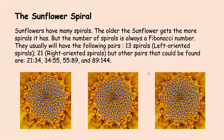Now let's see some sunflower spirals. Sunflowers have many spirals — the older the sunflower gets, the more spirals it has, but the number of spirals is always a Fibonacci number. They usually have the following pairs: 13 spirals on the left-oriented side and 21 right-oriented spirals. Other pairs that can be found are 21 to 34, 34 to 55, 55 to 89, and 89 to 144. Looking at the sunflower images, they're all the same sunflower — the middle image shows 13 left-oriented spirals, and the image at the very right shows 21 right-oriented spirals. See if you can find some spirals on your own sunflowers.